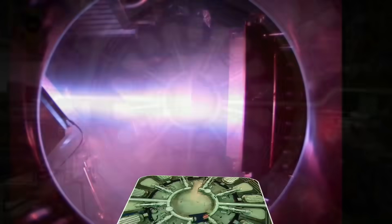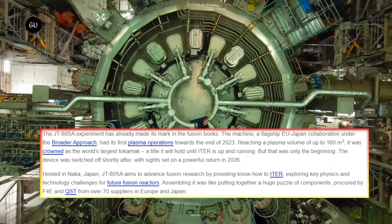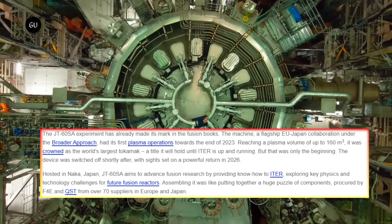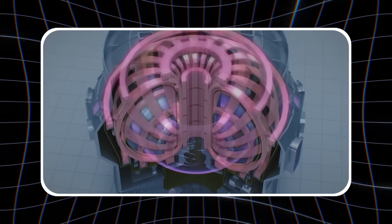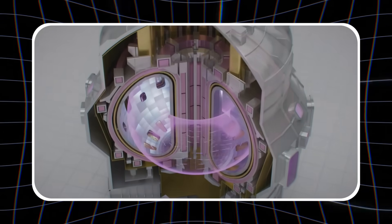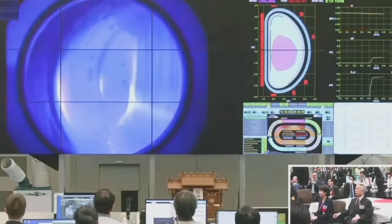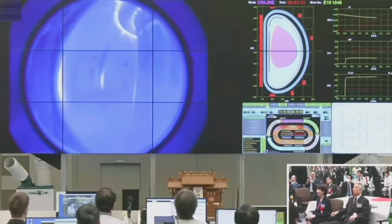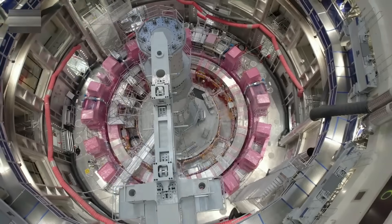The shutdown nobody expected. JT-60SA, Japan's six-story fusion behemoth, was pushing boundaries when alarms triggered throughout the facility. Official sources say testing terminated for safety. But behind the scenes, something triggered full system lockdown.